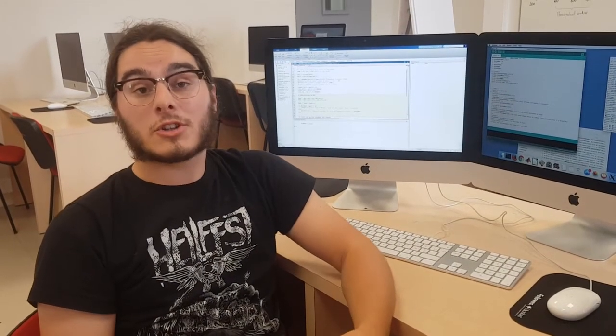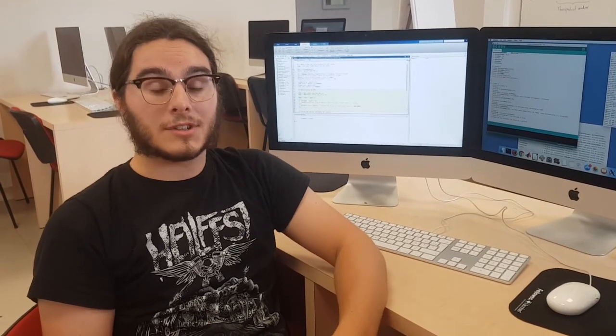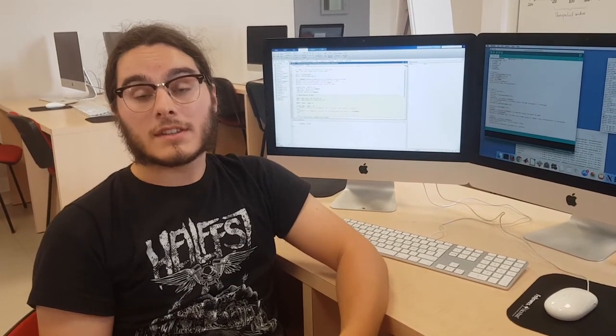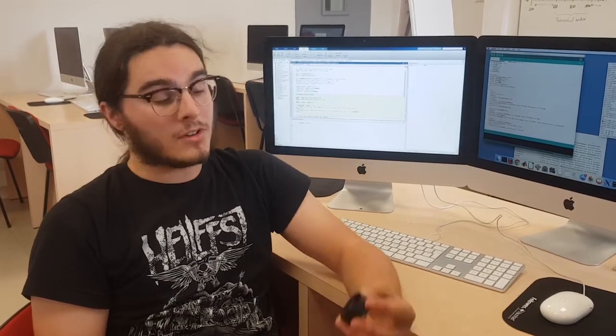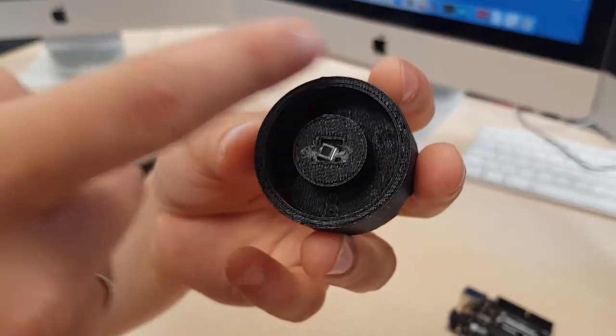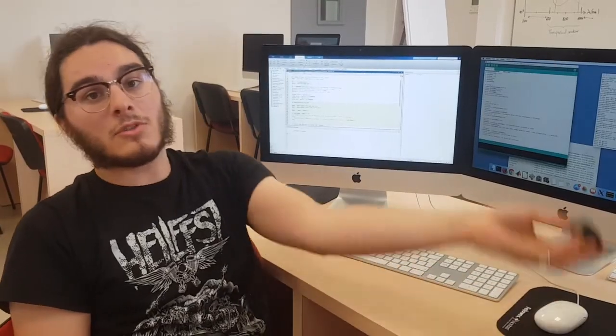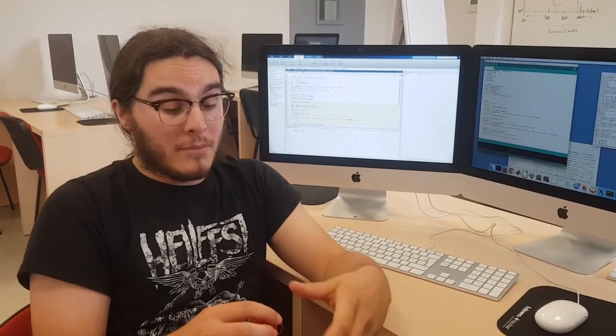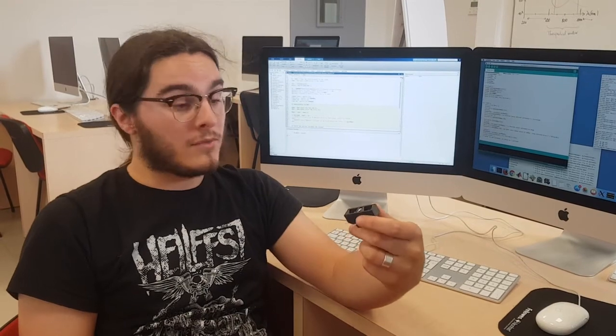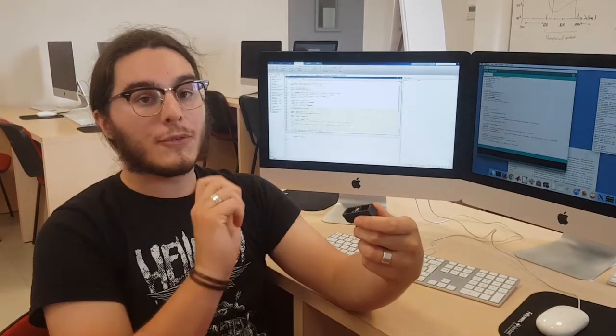For the hardware, we needed a compact device optimized so the signal we get is clean and treatable. We first tried this kind of shape: six LEDs on the outside and the photodiode in the middle. But it wasn't ideal. So we came up with this 3D-printed device, with two LEDs on each side and the photodiode in the middle.